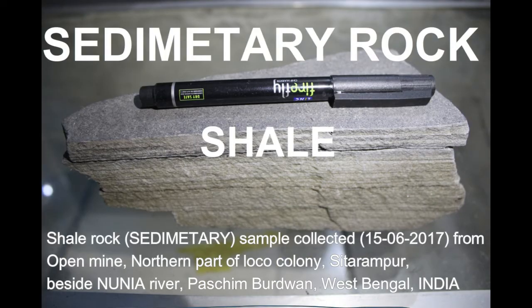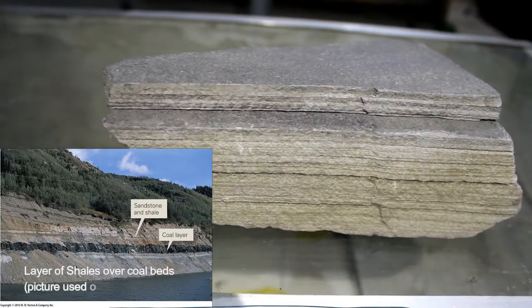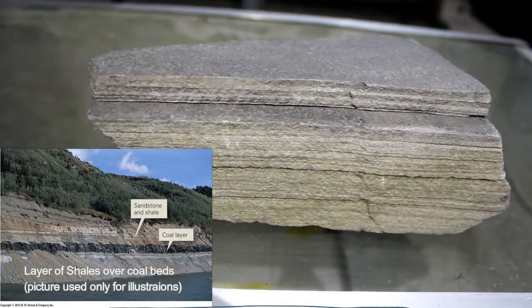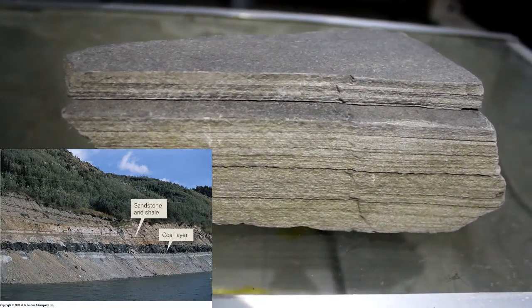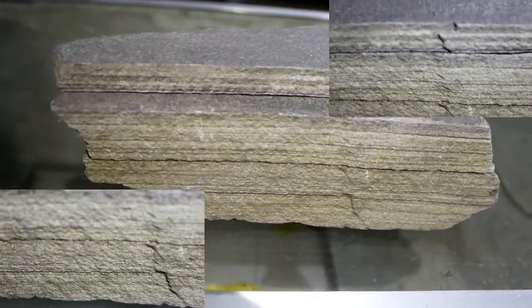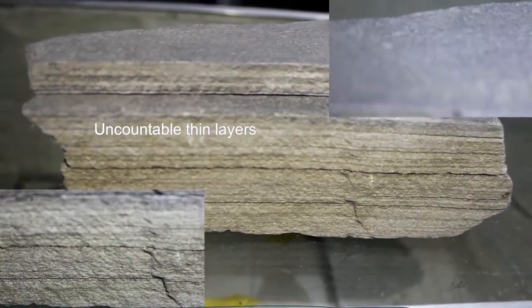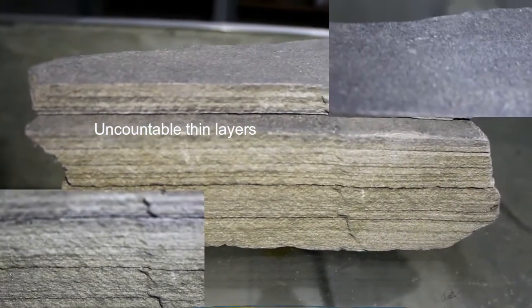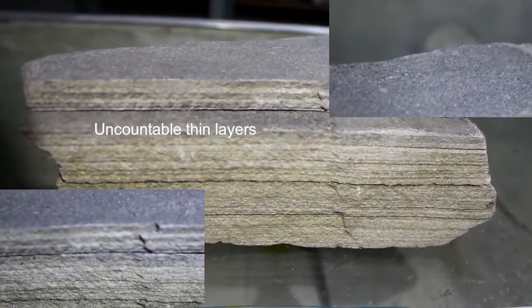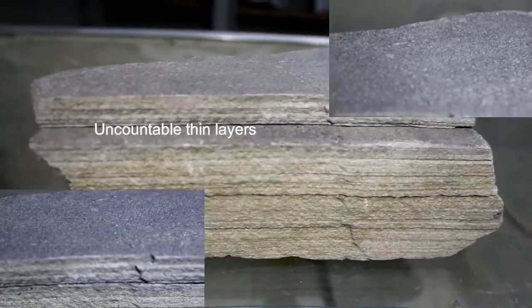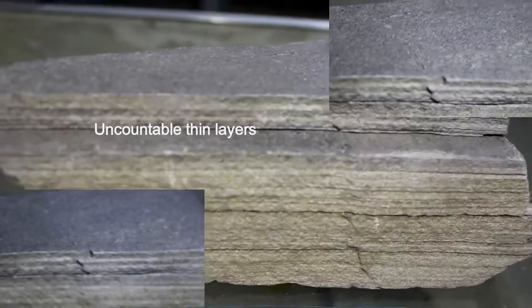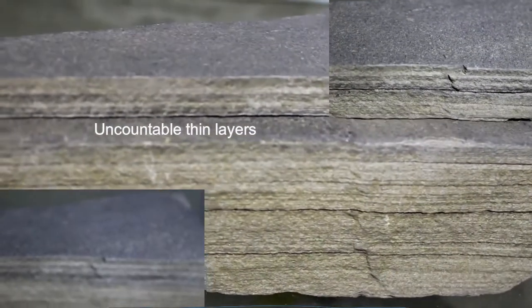Sedimentary rocks are types of rocks that are formed by the deposition and subsequent sedimentation of minerals or organic particles on the floor of oceans or other bodies of water at the earth's surface. Sedimentation is the collective name for the process that causes these particles to settle in place.